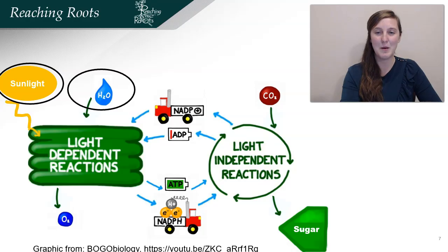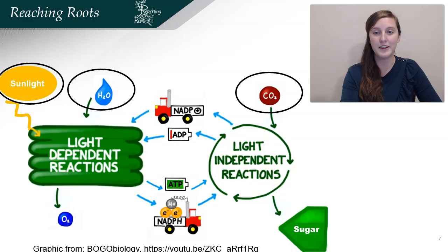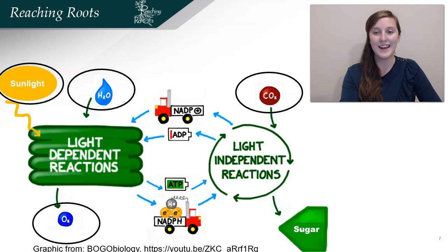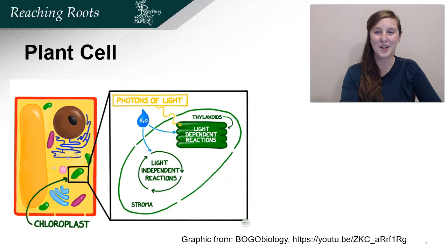The inputs, remember, are sunlight and water. Carbon dioxide is an input to the light-independent reactions, which we'll talk about next time. The output that we're going to cover today is oxygen, ATP, and NADPH, and the output we'll talk about next time is sugar.